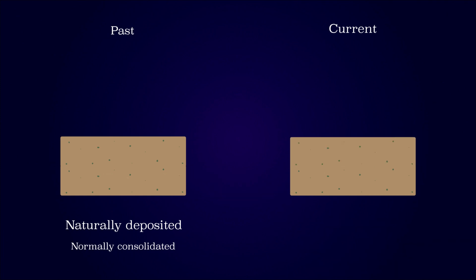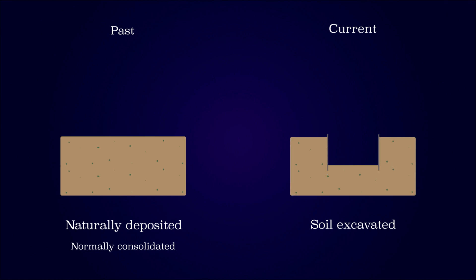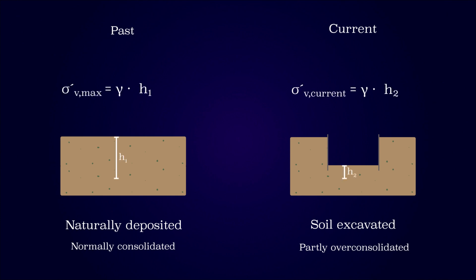When we perform excavation works, we are also removing the overburden pressure from the soil, while the underlying soil becomes overconsolidated. The soil beside the excavation is still normally consolidated, since the effective stress is the same. The overconsolidation ratio can in this scenario be calculated directly as the difference between the vertical effective stress before and after the excavation.